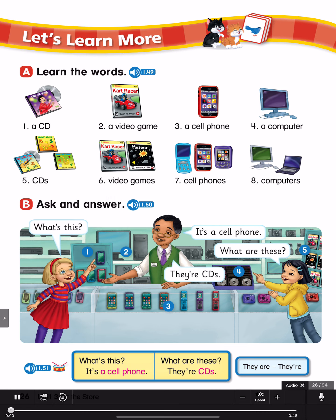Page 26, Let's Learn More A. Learn the words. Number 1: a CD. Number 2: a video game. Number 3: a cell phone. Number 4: a computer. Number 5: CDs. Number 6: video games. Number 7: cell phones. Number 8: computers.